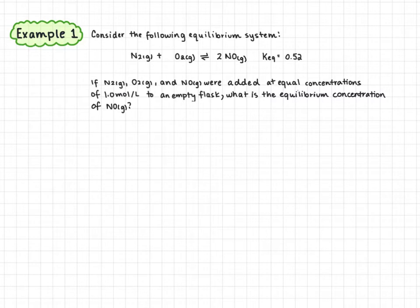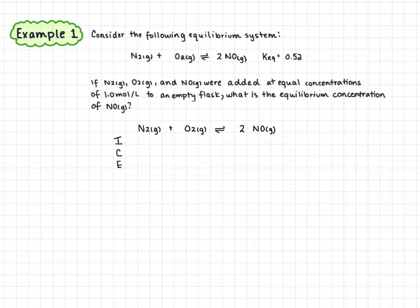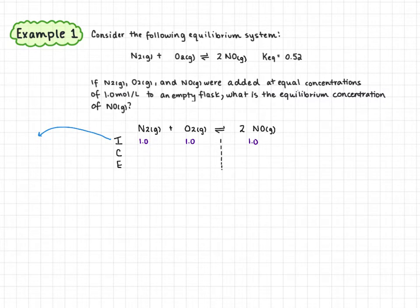We're going to start by writing down our ACE table with our reaction, and fill in I, C, E. Our initial concentrations are all 1.0. Any time we have initial concentrations for all of our species, we're going to calculate Q to figure out which side will decrease in concentration and which side will increase in concentration.